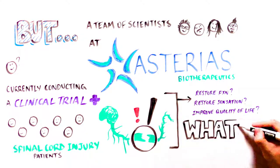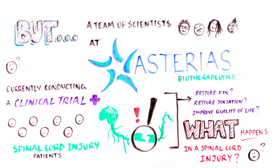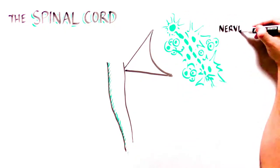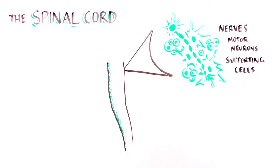Before we jump in, let's understand what happens in spinal cord injury. The spinal cord is a big bundle of nerves and supporting cells, including specialized nerve cells called motor neurons, which are responsible for movement.